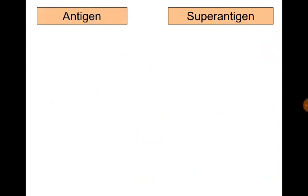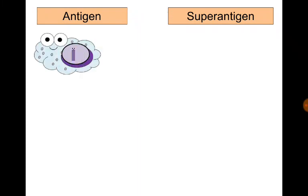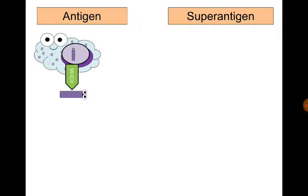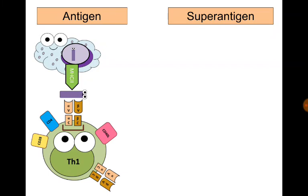Lastly, let's talk about the term superantigen. For normal antigens, to induce activation of T-helper cells and the resulting cytokine production, they must be phagocytosed by an antigen-presenting cell and shown on its surface attached to an MHC class 2 molecule, then attached to the variable portions of both alpha and beta chains of the T-cell receptor. As a result, only a small number of T-helper cells are activated and only the required quantities of cytokines are produced.